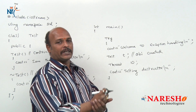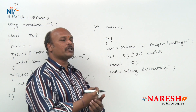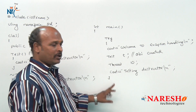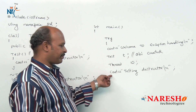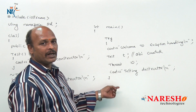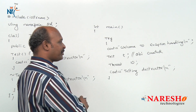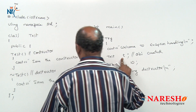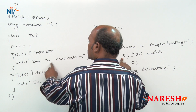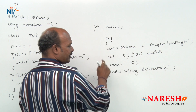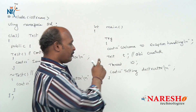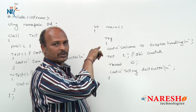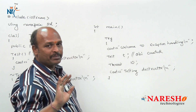When the throw statement occurs inside the try block, the program goes directly to the catch block, skipping the remaining statements. That means: first "welcome to exception handling" is printed, then the object is created so "I am the constructor" is printed — those two statements complete. When throw occurs, the remaining statement in the try block is not printed on screen.